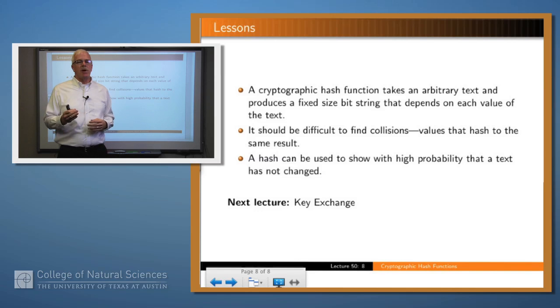So what have we said? Well, a cryptographic hash function takes an arbitrary text and crunches it down essentially into a fixed size value that depends on every byte, even every bit in the text. It should be very difficult for these functions to find collisions, i.e. to find two different values which give you the same hash value when you compute the hash function on them.